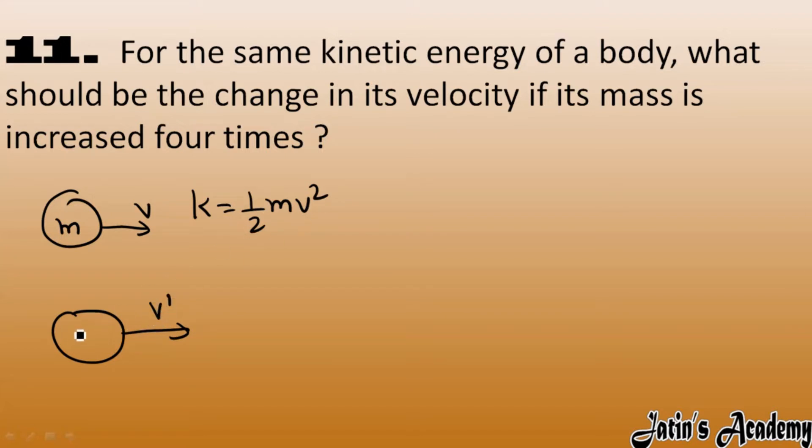So how is this possible? Carefully see, this k dash and this k is the same. k dash equals k. Now k dash, we have half, mass we have four m, and velocity we have v dash square.